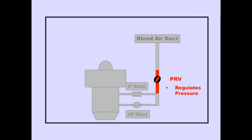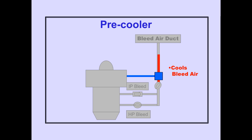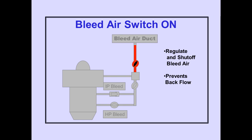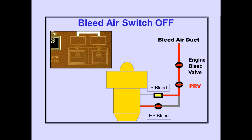The pressure regulating valve, or PRV, regulates pressure. The pre-cooler uses engine fan air to cool the bleed air, reducing temperatures in the bleed air system. The engine bleed valve is used to regulate and shut off engine bleed air, and also prevents backflow to the engine. With the engine bleed air switch on, the engine supplies bleed air to the bleed air system. Pushing the engine bleed air switch off closes the engine bleed air valve, the PRV, and the HP bleed valve. The off light illuminates when the engine bleed valve is closed.